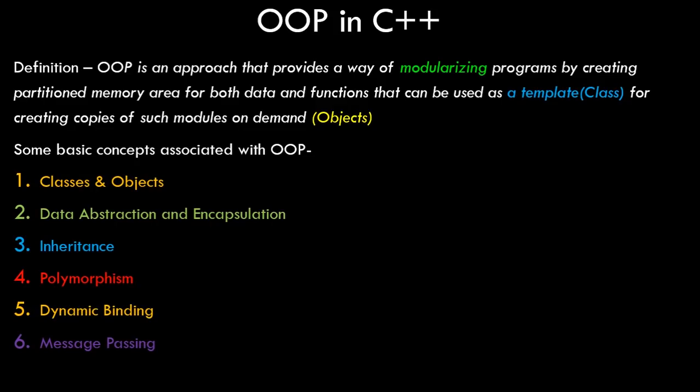The basic concepts associated with object oriented programming that we'll cover throughout upcoming tutorials are: first, classes and objects, which we'll see in this video; then data abstraction and encapsulation, where data is bundled inside the object with functions that operate on it and the process is hidden from the outside world; then inheritance, where we can take properties of one class and transfer them to another; and finally polymorphism, dynamic binding, and message passing.